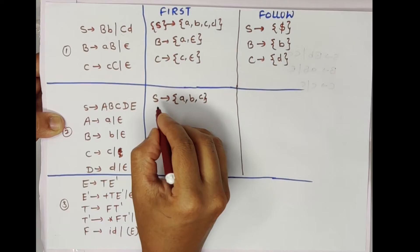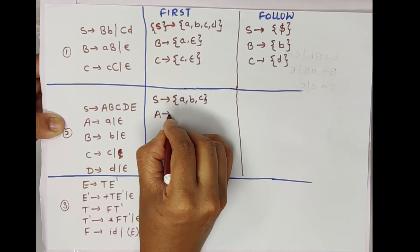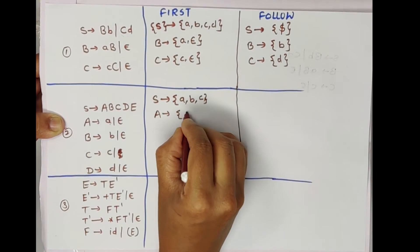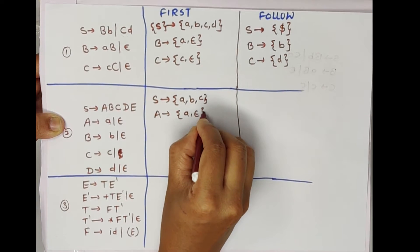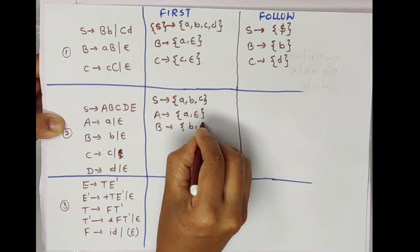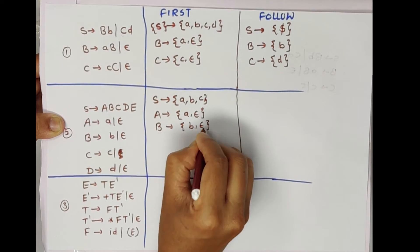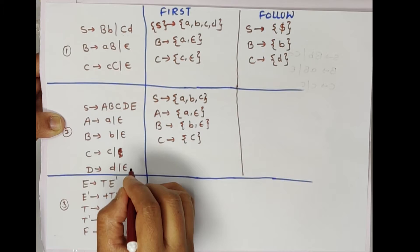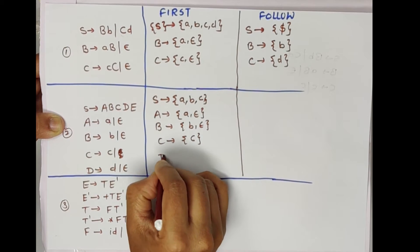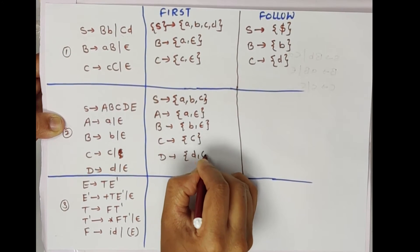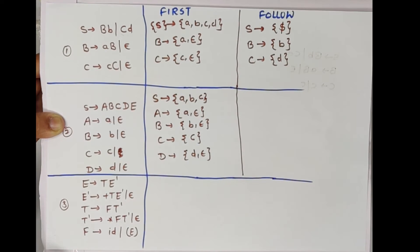Now we will find FIRST of each variable. FIRST(A) = {a, ε}. FIRST(B) = {b, ε}. FIRST(C) = {c} — there is no epsilon. And FIRST(D) = {d, ε}. In this way we are getting FIRST sets for this grammar.